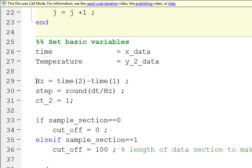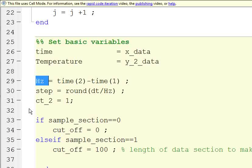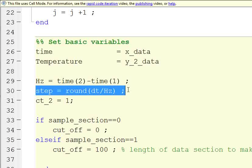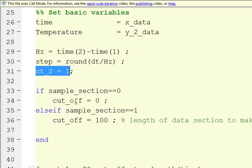So then we're going to generate a Hertz rate. We're going to say, okay, what's the difference between the first and second timestamp? So that's going to determine our sampling frequency in Hertz. This step is going to determine how far we're going to move along in our loop. So we're just going to round the DT that we said earlier divided by the Hertz. And we're going to set a counter. Counter 2 is a second counter.